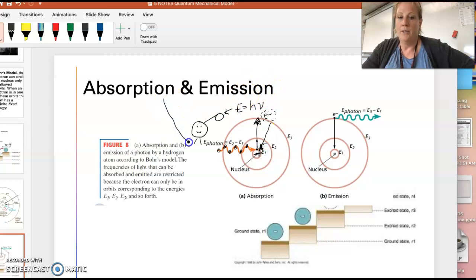So absorption is the photon with a certain amount of energy specific to that energy level jump that's going to be absorbed by the electron. Then the electron returns back to ground state, and it gives that energy back. It emits it. It's emission.